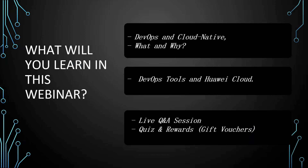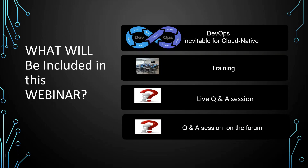Here are the three topics we're discussing today: DevOps and cloud native — what they are, why we use them — and what are the DevOps tools for Huawei Cloud. Then we'll have a live Q&A session, a quiz, and rewards from the Huawei enterprise support community. Most of you know we have a one-and-a-half-hour session: one hour for concepts and lab, then Q&A. You can ask questions in the comment box during the session, and I'll try to answer or address them at the end.